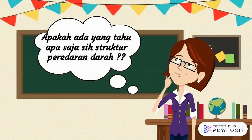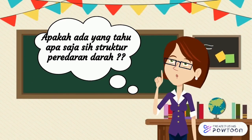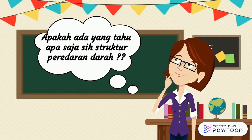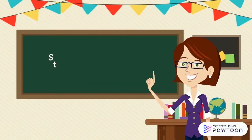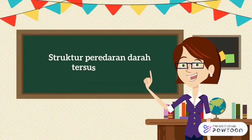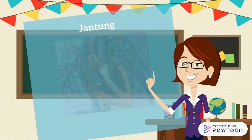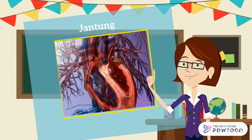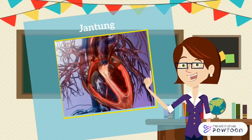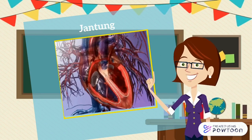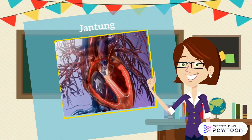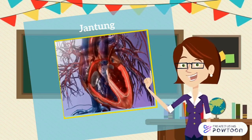Apakah ada yang tahu, apa saja sih struktur peredaran darah? Jadi, struktur peredaran darah tersusun atas yang pertama ada jantung. Jantung adalah rongga organ berotot yang memumpah darah melalui pembuluh darah oleh kontraksi berirama yang berulang.